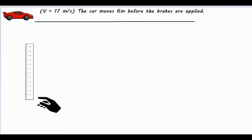The first one is a little bit more simple. It is reaction time of a driver applying the brakes. The car is initially going 17 meters per second. If the car moves a total of six meters before reacting and applying the brakes, then what is the reaction time?